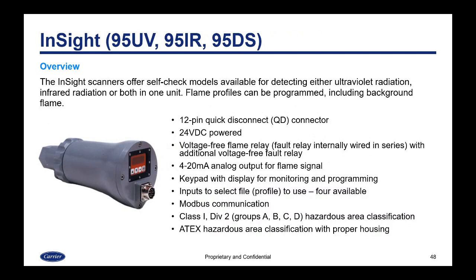The InSite scanners offer self-check models available for detecting ultraviolet radiation, infrared, or both in the same unit. This one has a 12-pin quick disconnect, is 24 volt powered, and has a flame relay, fault relay, and 4 to 20 milliamp analog output. It also has a keypad with display for monitoring and programming, inputs to select a fuel profile — with four available profiles — and adds Modbus communication. By default it is Class 1 Div 2 rated and can be ATEX hazardous area classified with a proper housing.